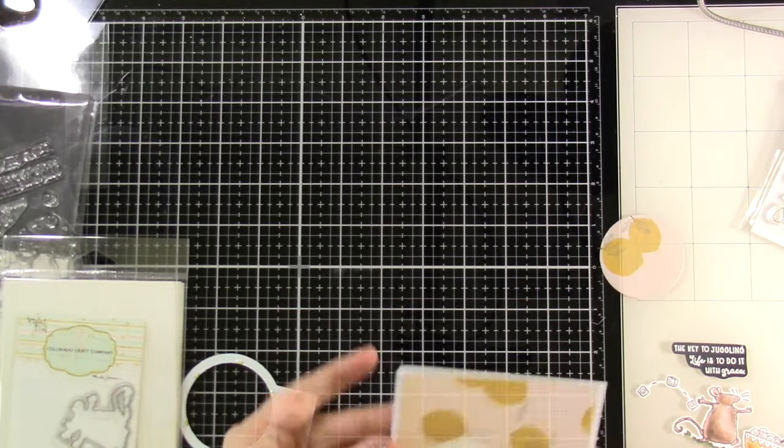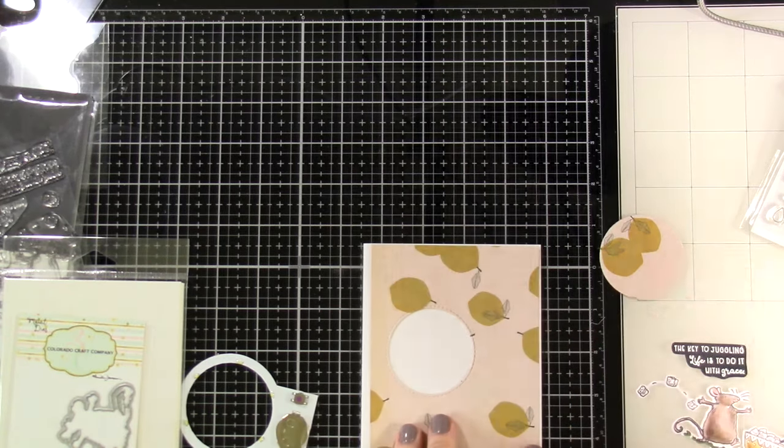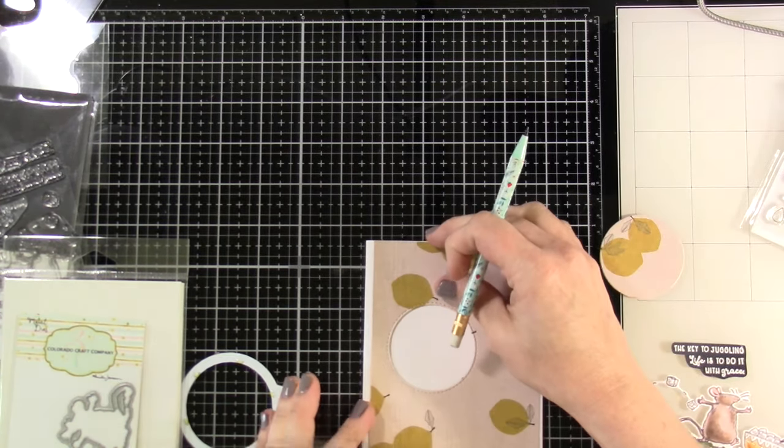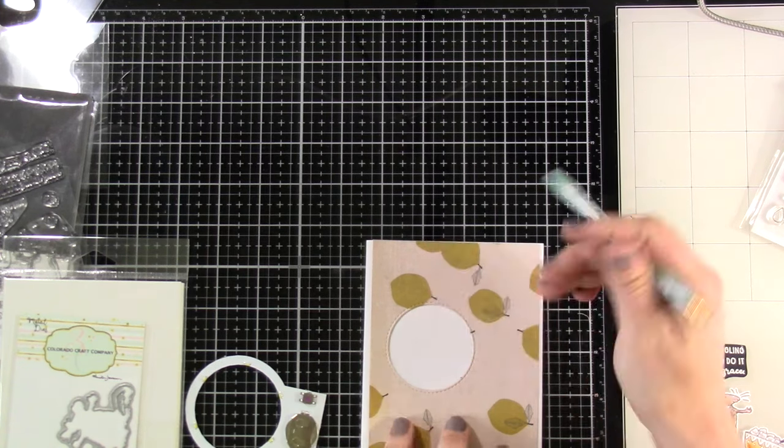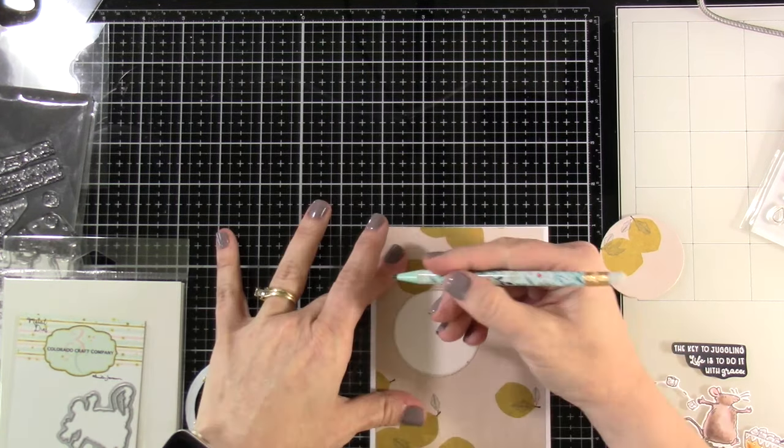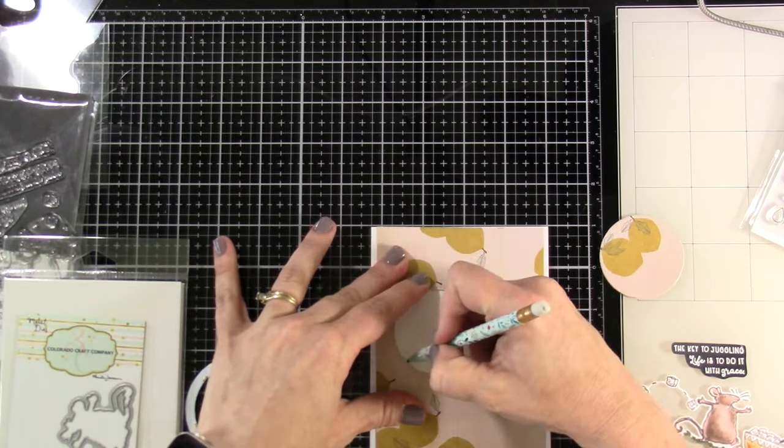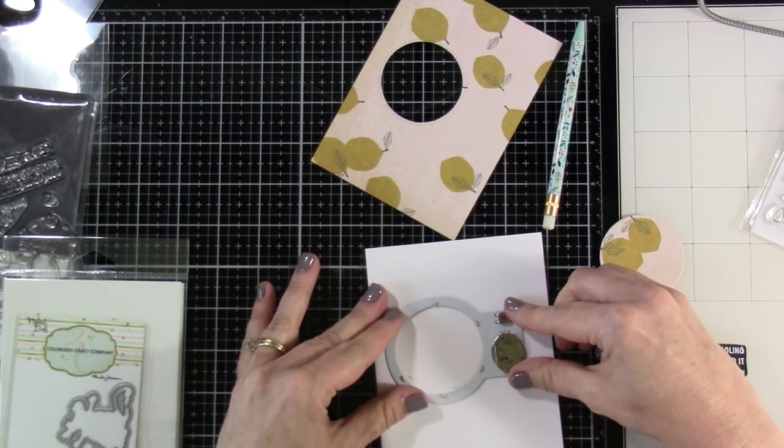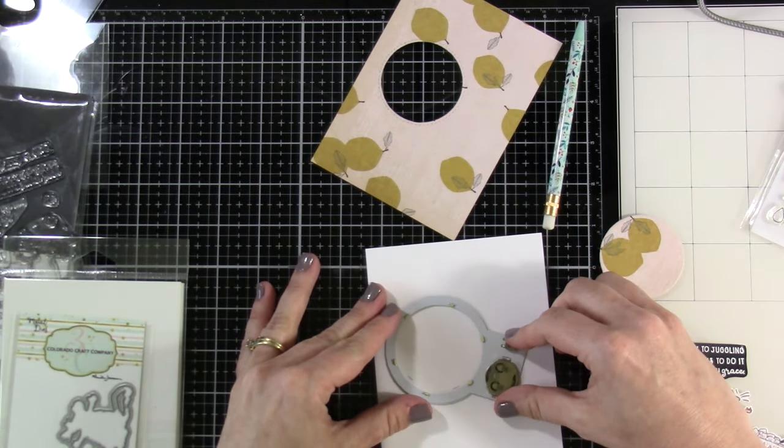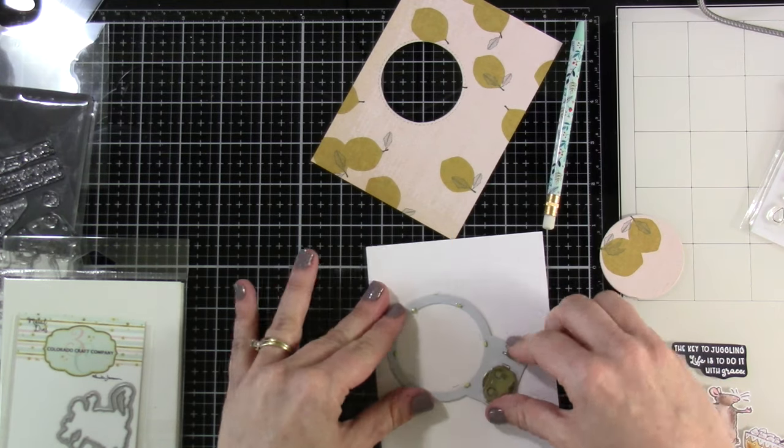I have a circle die from My Favorite Things and I'm going to die cut that out. It does leave a little bit of a stitched border which is super fun. As you can see, I have a pencil and I'm going to mark where that circle is. I'm just marking small sections of it and I'm not going very dark so I can erase it later. Then I can take my halo light and play around with where I think I want that halo light to go.